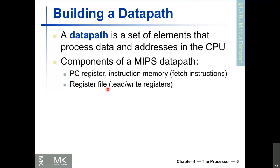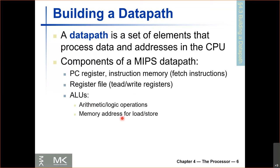We're going to need a register file to read and write registers, because instructions read from registers and write to registers. We're going to need an ALU, used for many things: for arithmetic and logic operations, and also for load and store instructions to calculate memory addresses — since load and store have a base register and an offset, and we need to add them together. We'll also need the ALU to calculate the branch target address. For branches, the target address is PC plus 4 plus offset times 4, so we need the ALU to do that math.